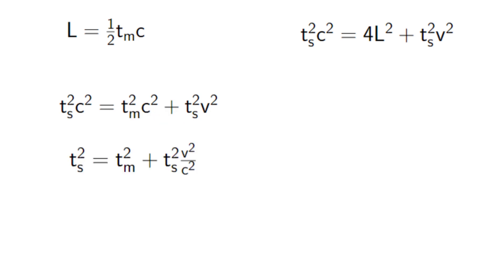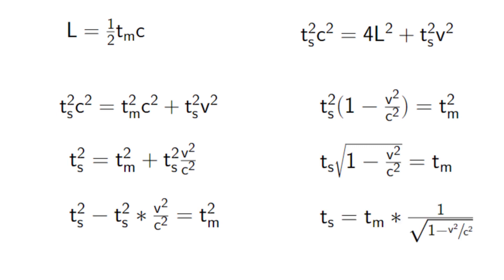we'll divide by c squared, subtract the last term to the other side, factor out this ts squared, take the square root of both sides, and then divide this square root to the other side. And this finally gives us the time dilation equation.